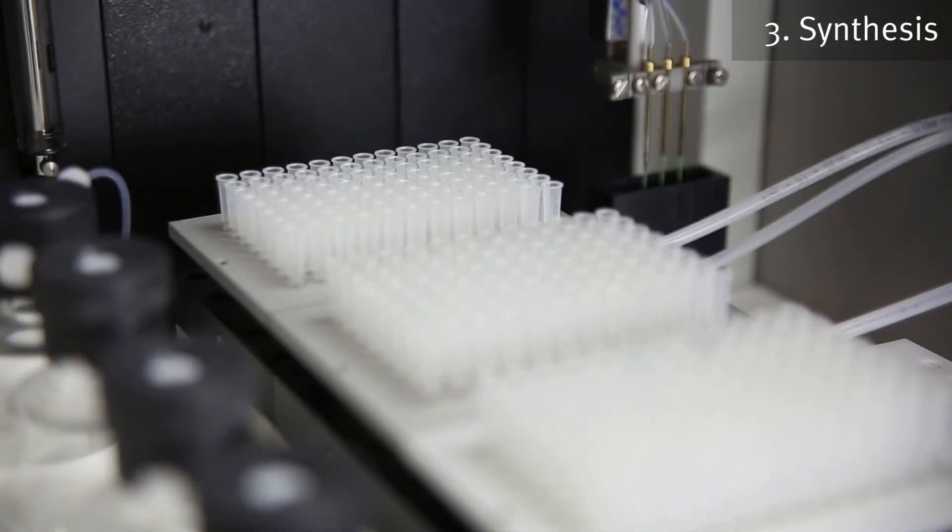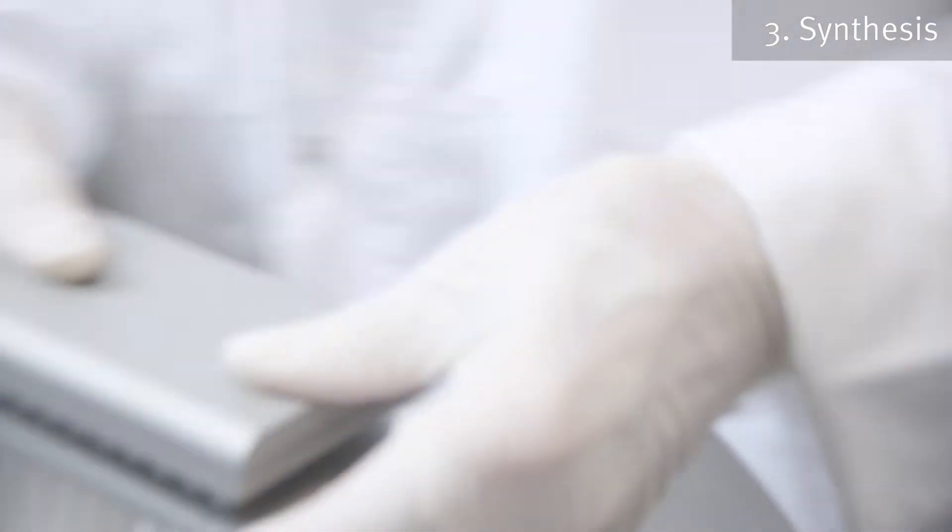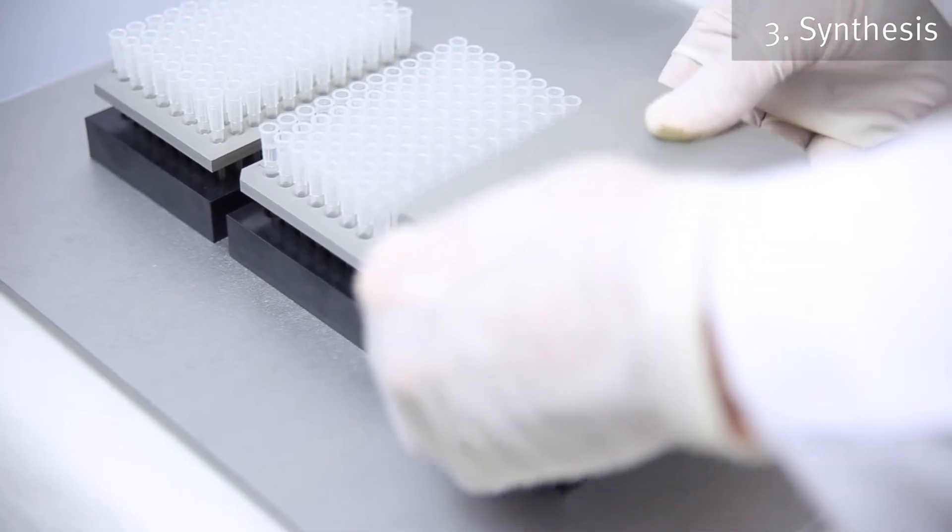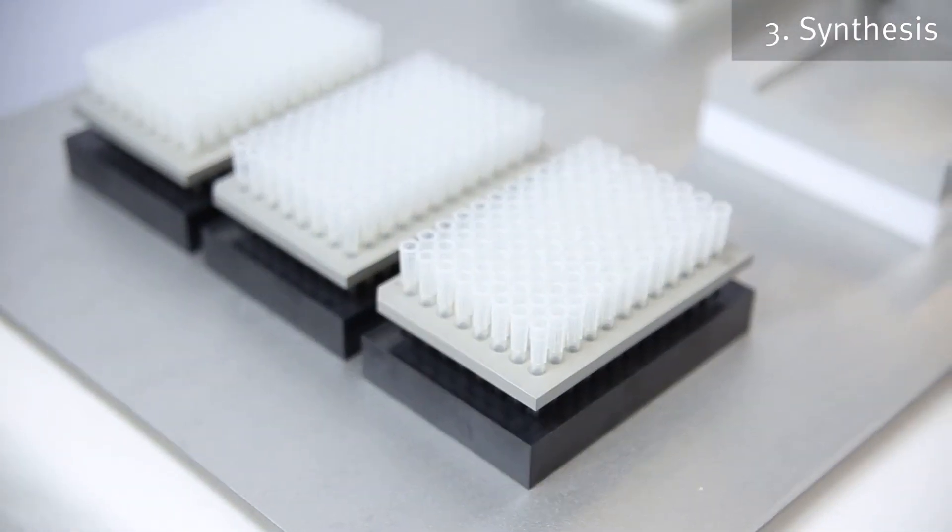Once the programmed synthesis is completed and the peptidyl resins in the tip reactors have been washed and dried in readiness for cleavage, cover the tip reactors with the reactor cover plate and remove the whole reactor rack from the SIRA synthesizer, then transfer it to the blind plate on the cleavage module.